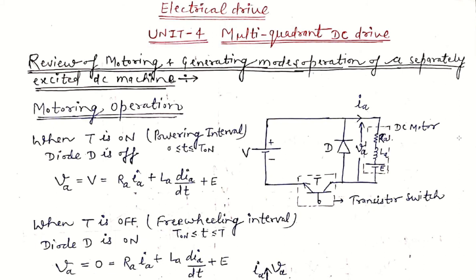Good morning students. Today we will start Unit 4: Electric Drive. This unit is named multi-quadrant DC drive. In DC drive, we control the DC motor speed by employing DC controllable devices or DC power electronic devices which produce DC power output — either a rectifier or chopper. This unit basically belongs to chopper-controlled DC drive. By employing the chopper, we will control the armature voltage, which is the DC voltage input to the armature winding, by controlling the duty cycle.